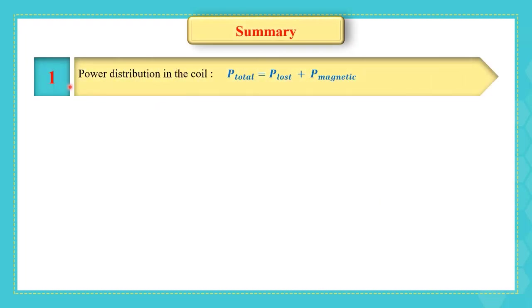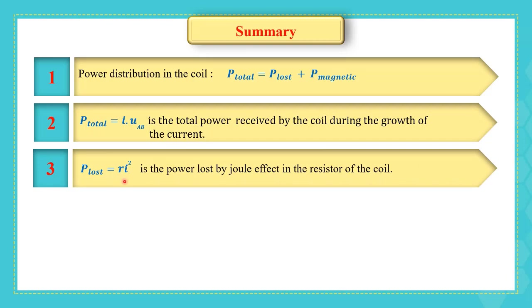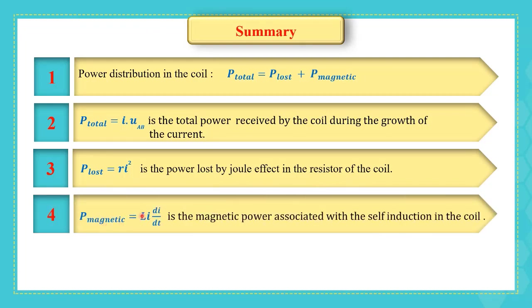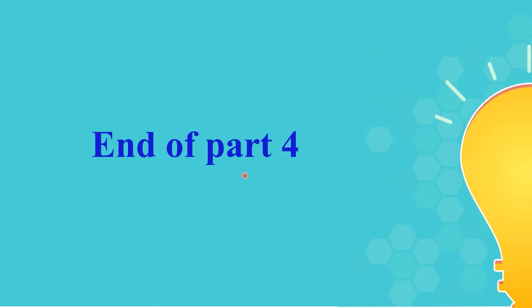As a summary: P_total = P_lost + P_magnetic. P_total = iU_AB is the total power received by the coil during current growth. P_lost = Ri² is the power lost by Joule effect in the resistor. P_magnetic = Li(di/dt) is the magnetic power associated with self-induction. The expression for magnetic energy stored in a coil, whether during growth or decay, is W = ½Li². This is the end of part four. Thank you for listening.